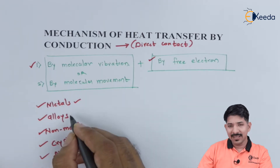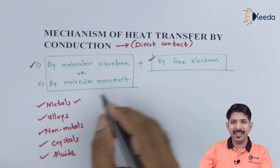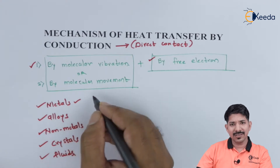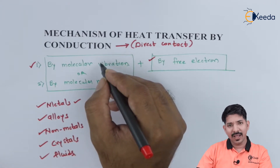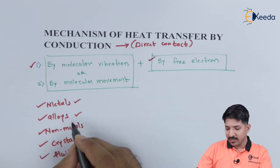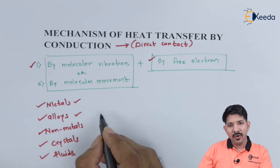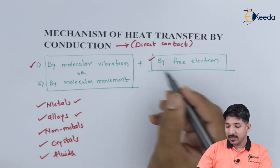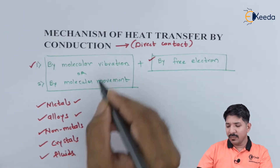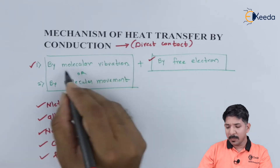In the case of metals, all of you know that the available free electrons are quite high — that is why the electrical conductivity of the metal is high, and so is the thermal conductivity of metals. In the case of alloys, because of the presence of impurities, the electrical conductivity may be lower, and so is the thermal conductivity. In the case of non-metals, mostly the heat transfer is possible due to molecular vibration.